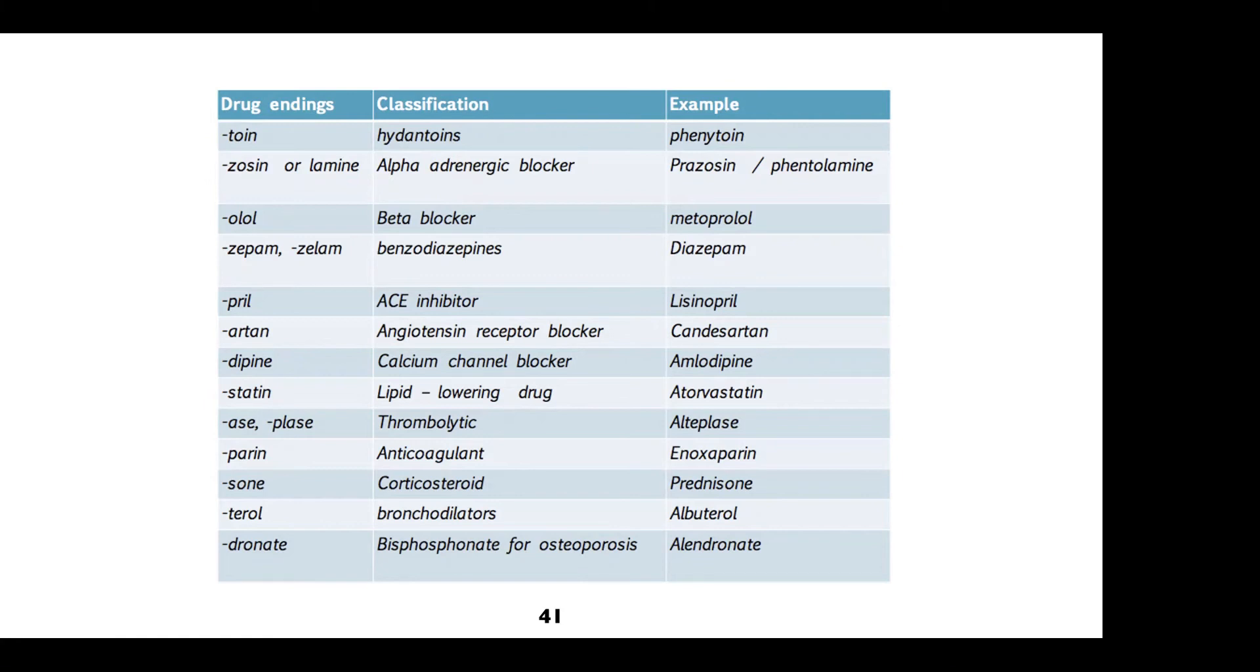ACE inhibitors and ARBs. ACE inhibitors end in pril. ARBs end in sartan. Calcium channel blockers end in dipine. So here we have a bunch of other cardiac drugs. Statins, those drugs to lower cholesterol.